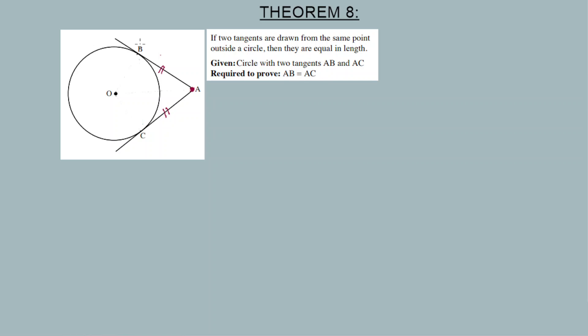Given a circle with two tangents AB and AC, we are required to prove that these lengths are equal. So for theorem eight, we need a construction. We need a construction.